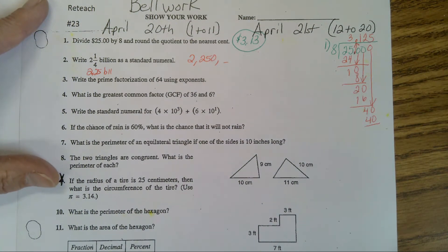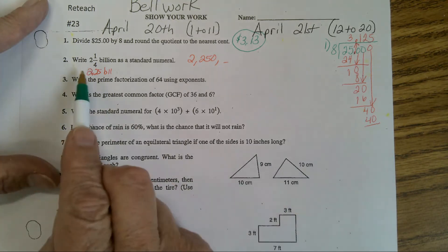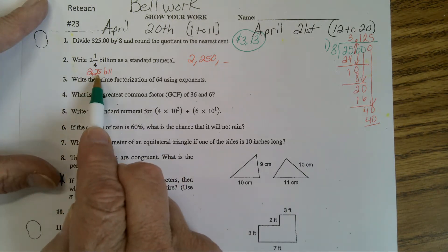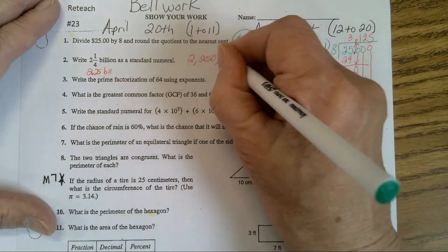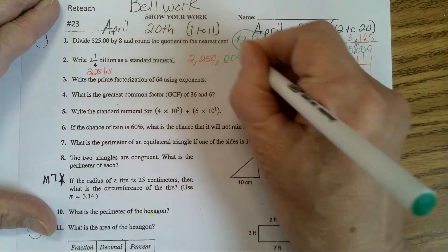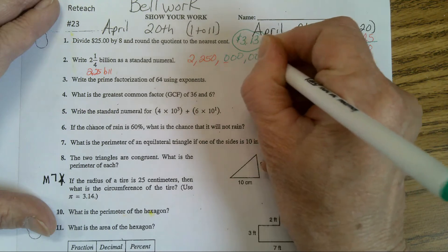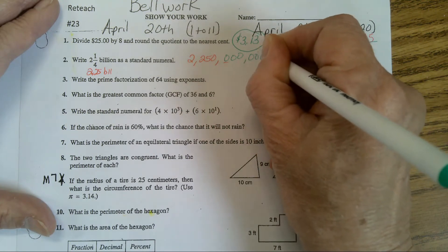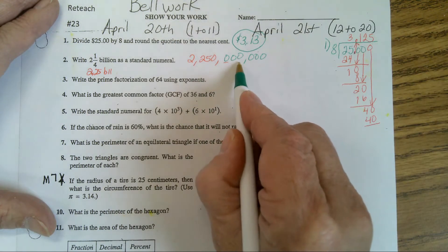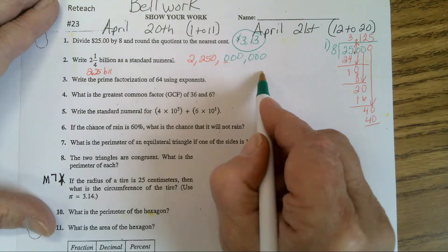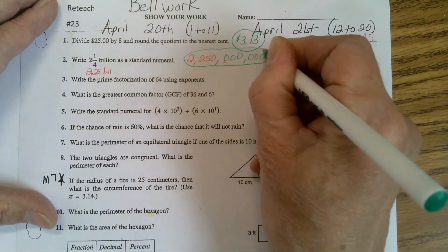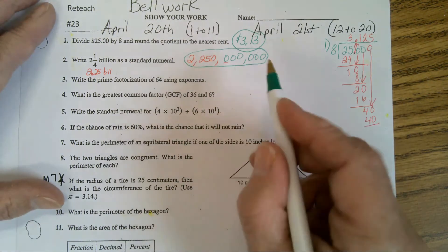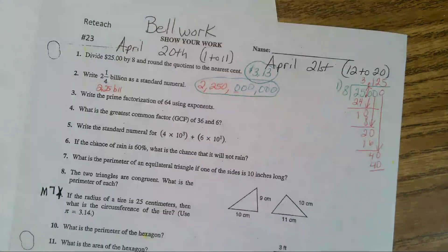For number 2, 2 and a 4th billion is 2.25 billion which is 2,250 million. You have three zeros in the thousands place and three zeros in the units. So 2,250,000,000 looks like that. A lot easier sometimes to write 2 and a 4th billion.